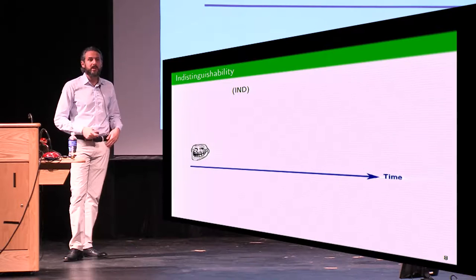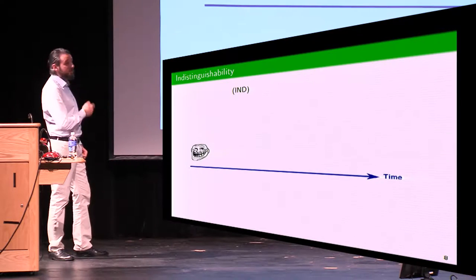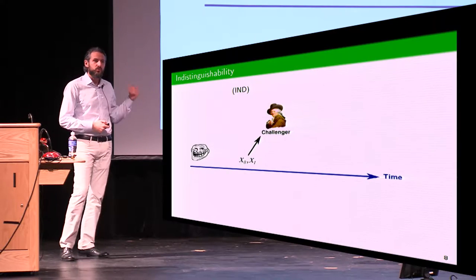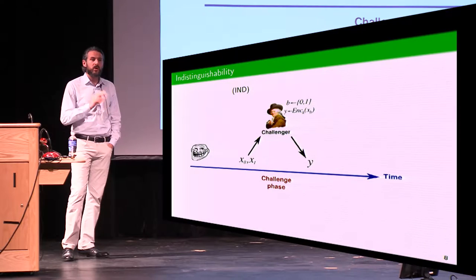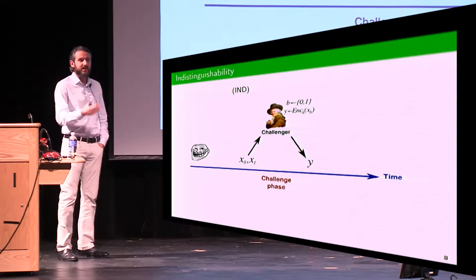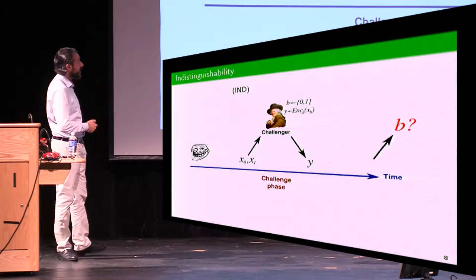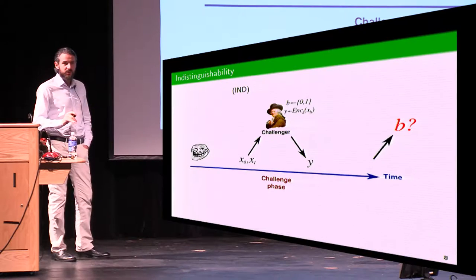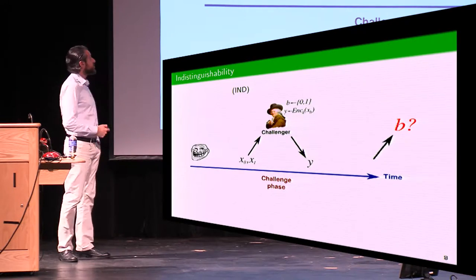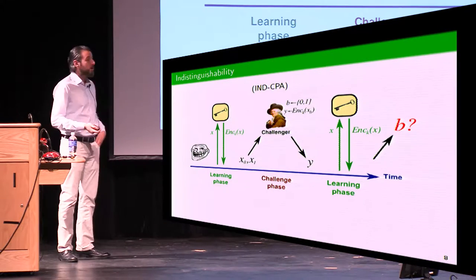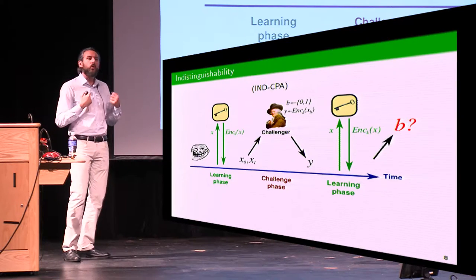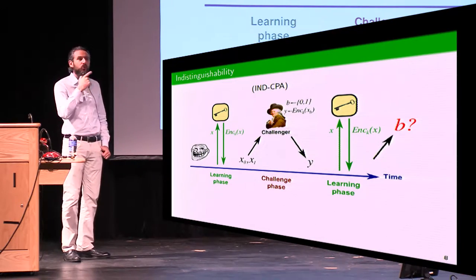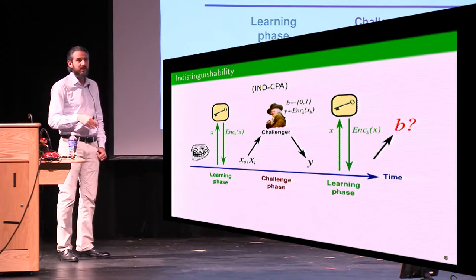Indistinguishability is a security notion for encryption schemes where an adversary produces two plaintexts of its choice. The two plaintexts are sent to a challenger. The challenger selects one of the two plaintexts at random without telling the adversary, encrypts it, and sends back the encryption to the adversary. We call this the challenge phase. The goal of the adversary is to guess which one of the two plaintexts was encrypted. This can be extended to indistinguishability under chosen plaintext attack, where we give the adversary the possibility of performing a learning phase before and after the challenge phase, querying the encryption oracle a polynomial number of times adaptively.